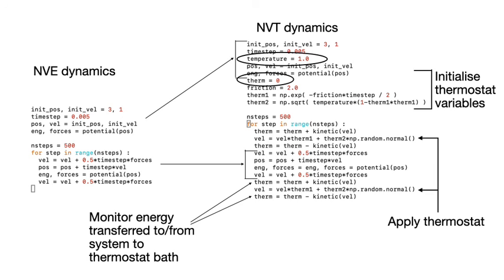This therm variable is used to monitor the energy that is being transferred to and from the environment. Monitoring this transfer of energy is important as the total energy of the system and the environment should be constant, as the dynamics should ultimately be conservative. When you write NVT codes, you should thus test that they are working by ensuring that the sum of this variable therm and the kinetic potential energies are equal to a constant.